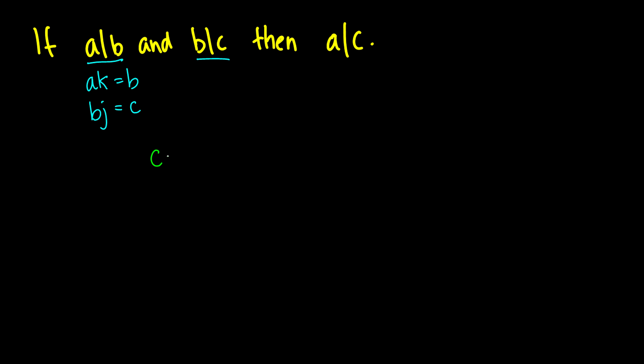Then we assume C, and we know that C is equal to B times J. Now let's substitute B in there. Okay, so now B is equal to A times K. So this is AK times J. Now what we'll do is we'll just move the parentheses around. So we have A times K times J. And we know this is some number. It's some positive integer, because K is a positive integer, and J is a positive integer. Therefore, when they multiply, they will be a positive integer. So we can conclude from this that A divides C.